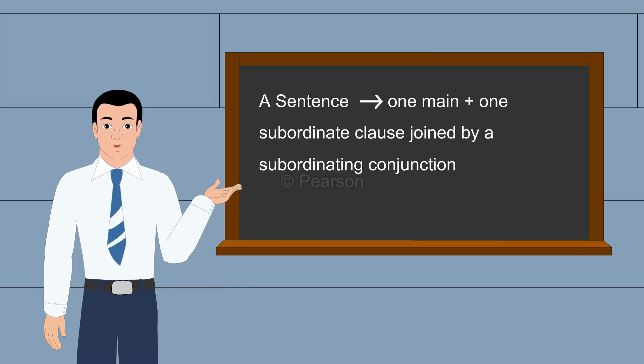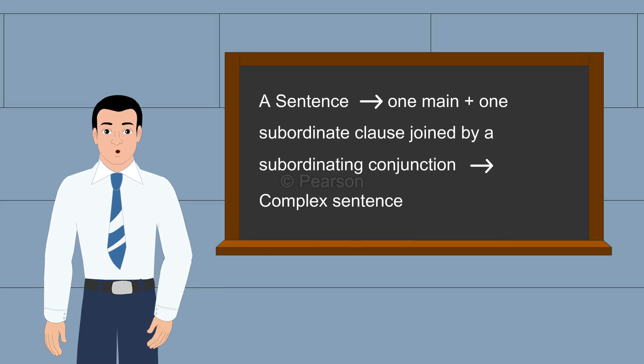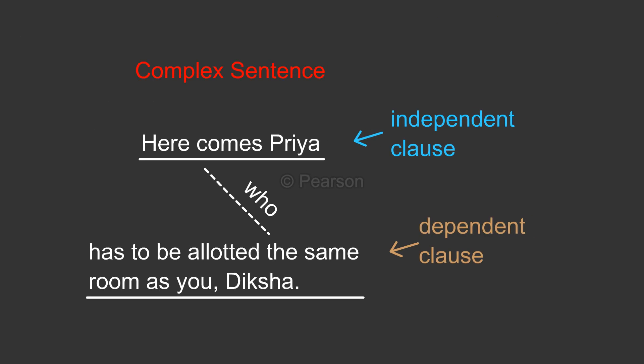A sentence having one main clause and at least one subordinate clause is called a complex sentence. There is an independent clause and a dependent clause. Here, the teacher says, 'Here comes Priya, who has been allotted the same room as you, Diksha.' Where 'who' is the subordinating conjunction which also works as a pronoun.